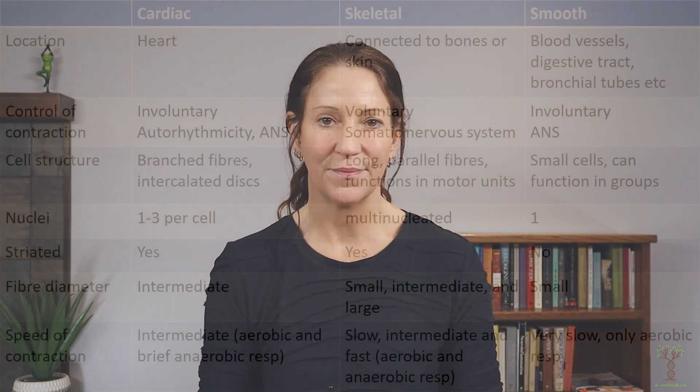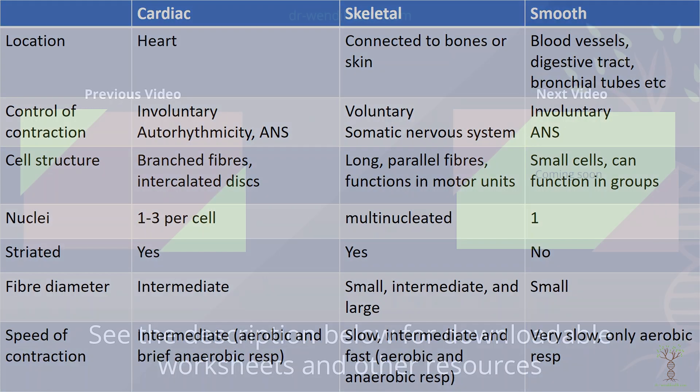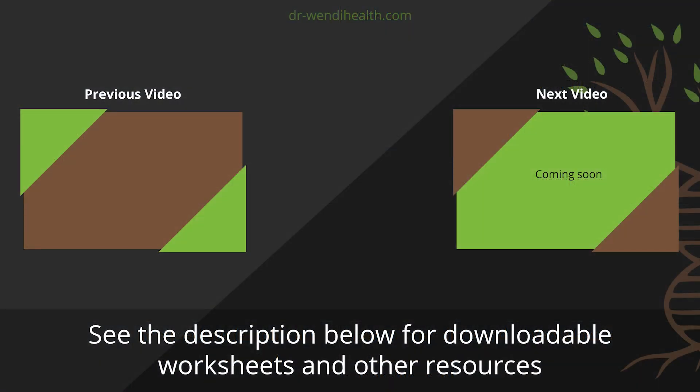That is an overview of our cardiovascular system. Here is a chart comparing cardiac muscle tissue with skeletal and smooth muscle tissue. We'll see you next time.